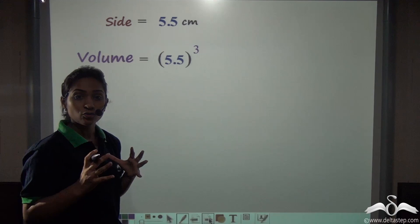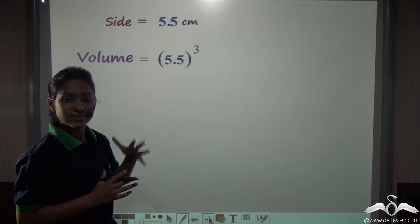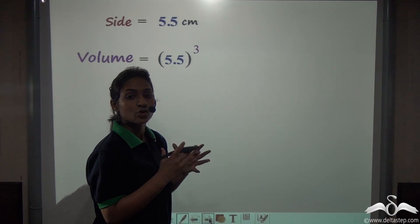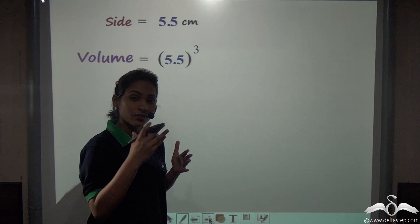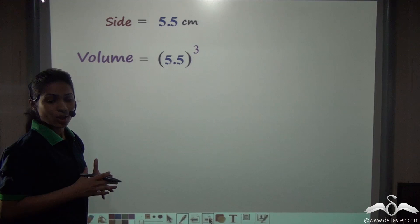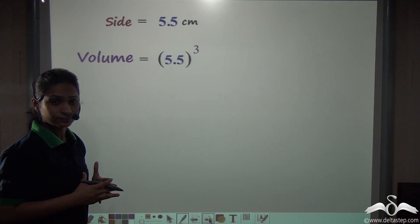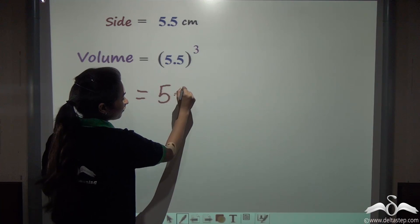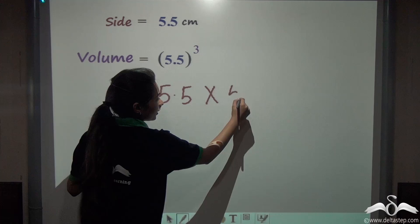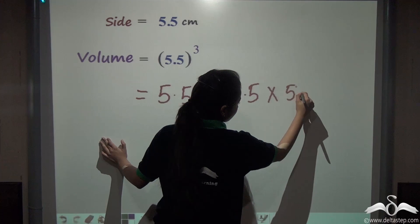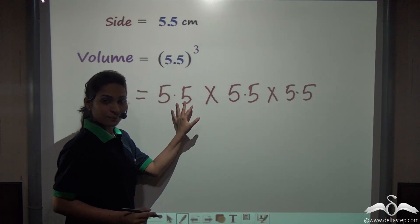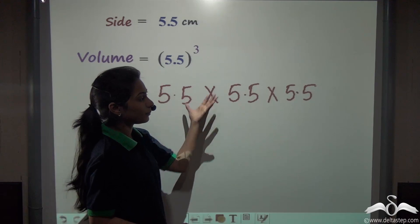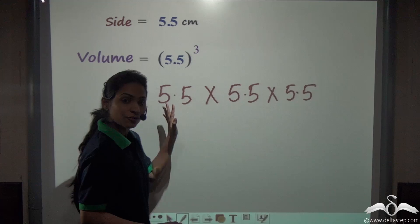You need to know how to find out the cube of a decimal number. For any whole number you just multiply it by itself three times — and here you will do the same thing. Multiply 5.5 by itself three times: 5.5 into 5.5, get the answer, then multiply it again with 5.5.